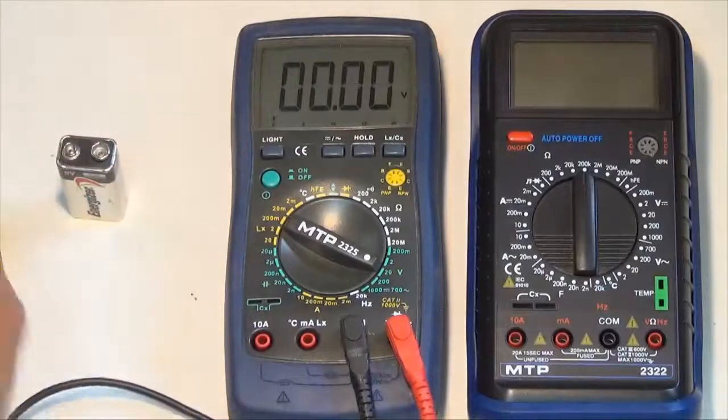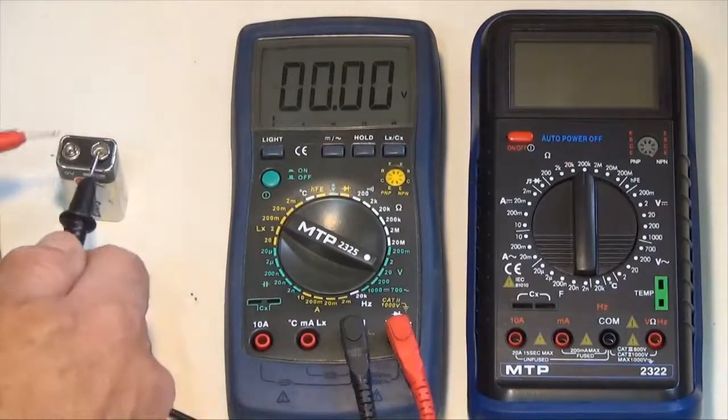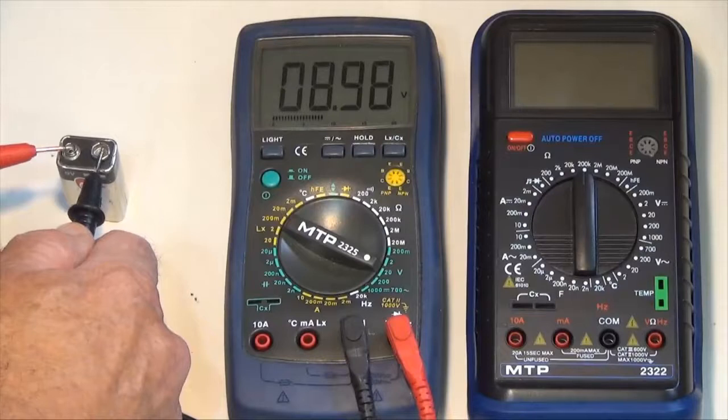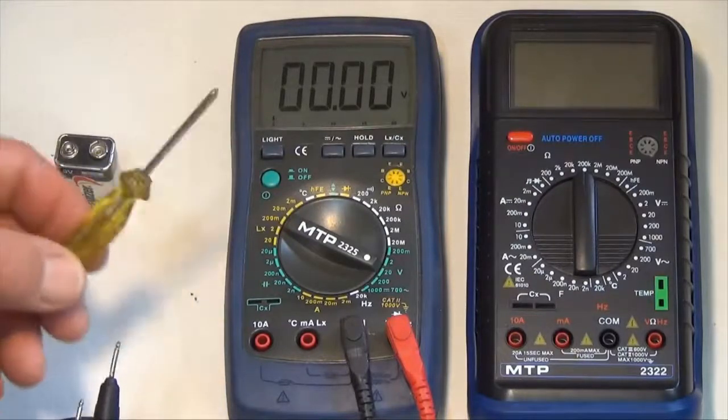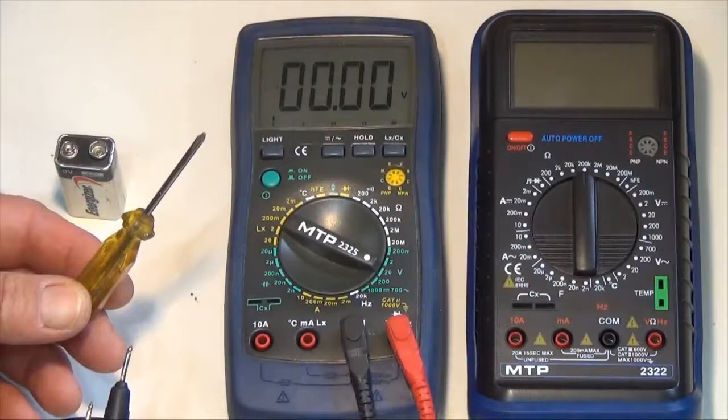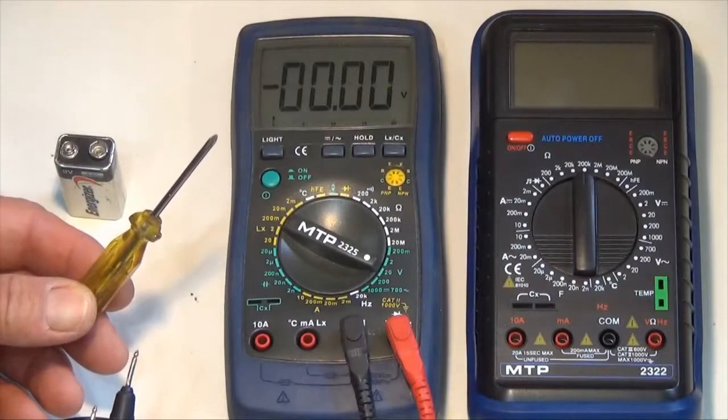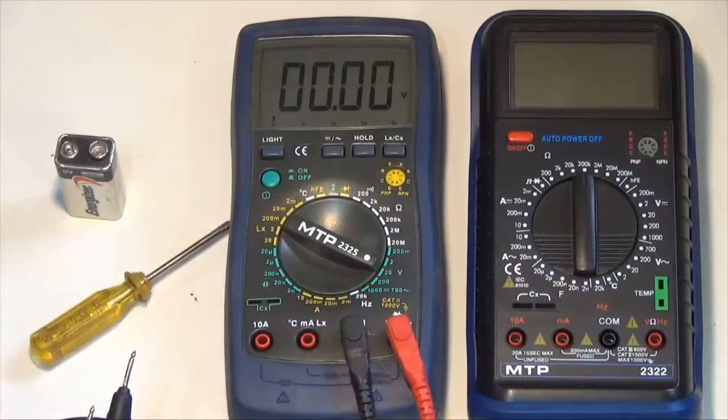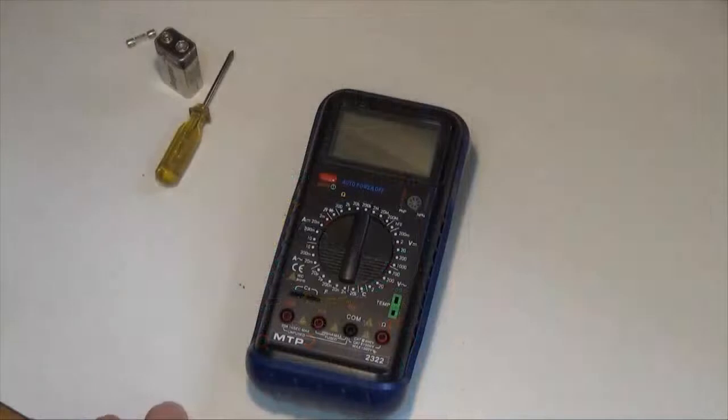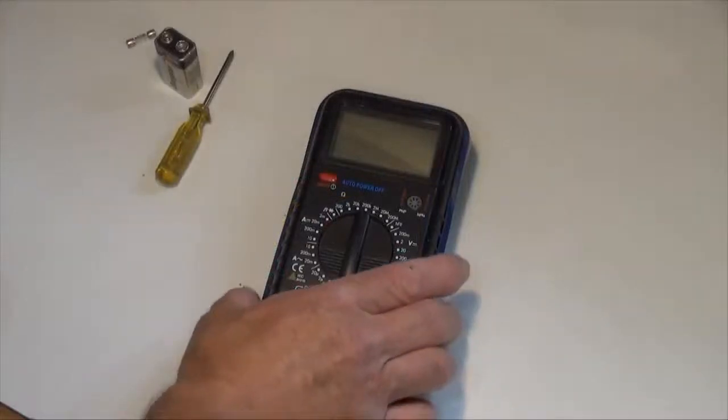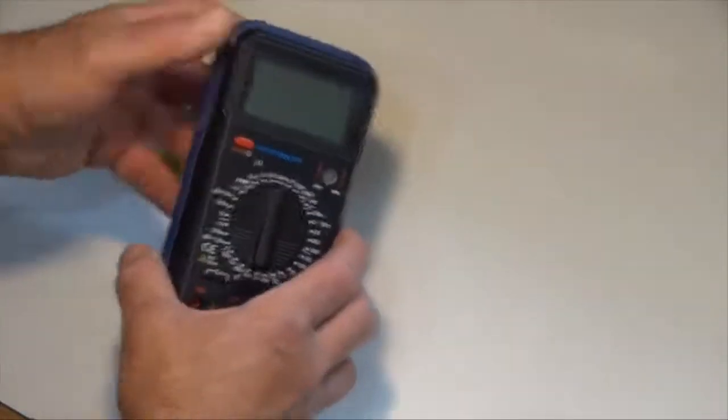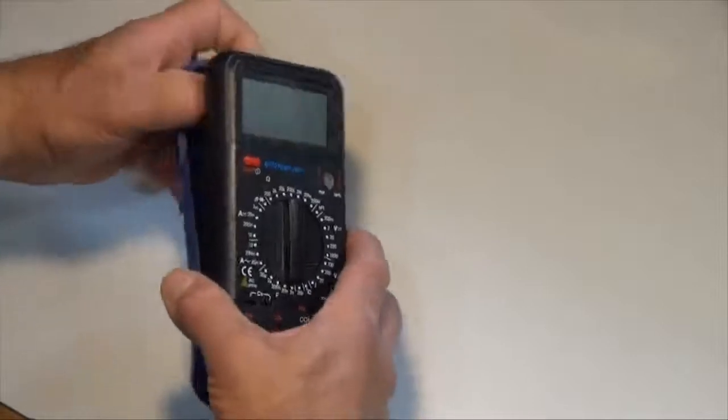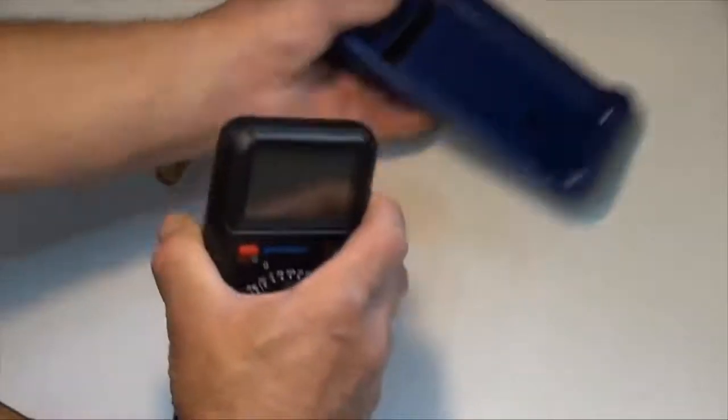So I've got a good battery here. And the other thing I'm going to need is a small Phillips screwdriver to take the back off. To take a multimeter apart, I need to take this rubber cover off. And you just simply pull it apart carefully. Set it aside.